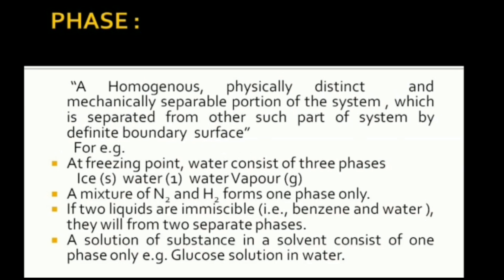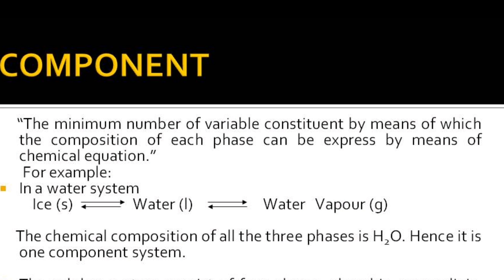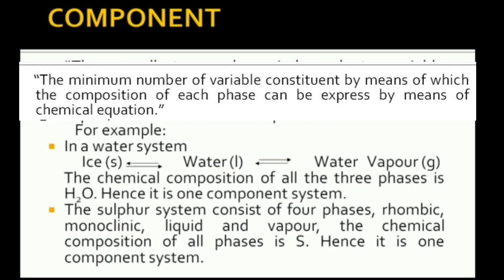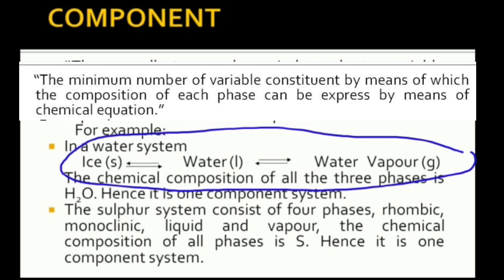The second term involved in phase rule is component. The minimum number of variable constituents by means of which the composition of each phase can be expressed by means of a chemical equation is known as components. To understand this definition, let us take an example of water which is in equilibrium with ice and water vapour. Ice is in equilibrium with water, and water is in equilibrium with water vapour.